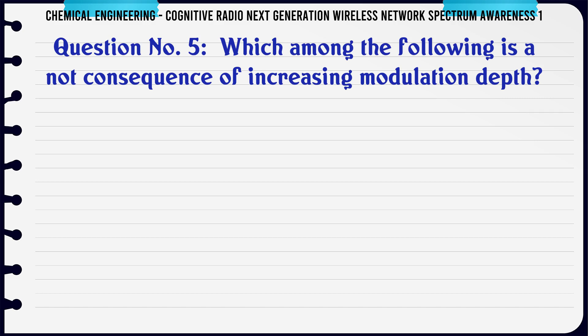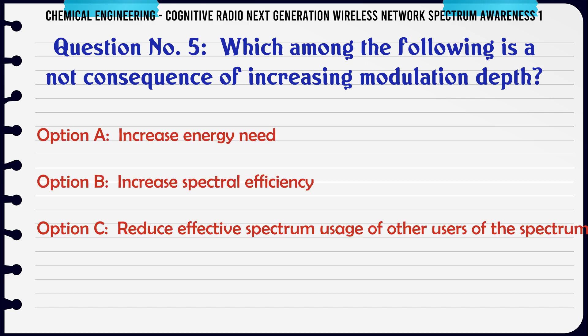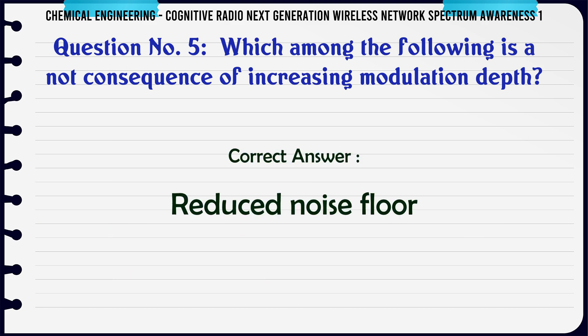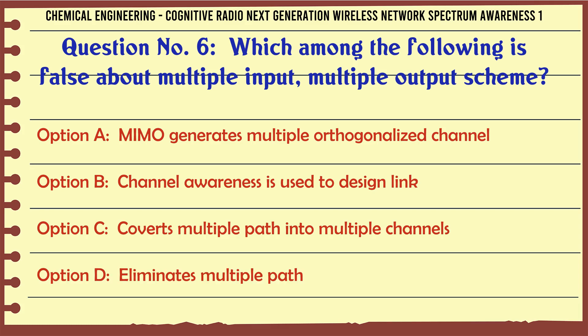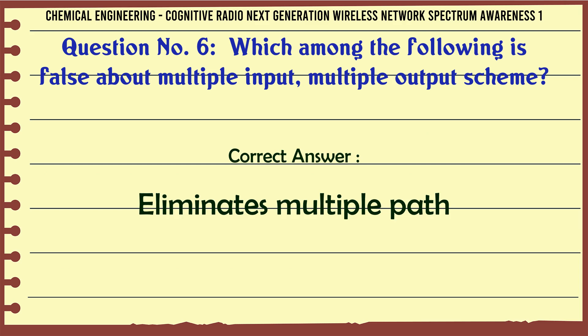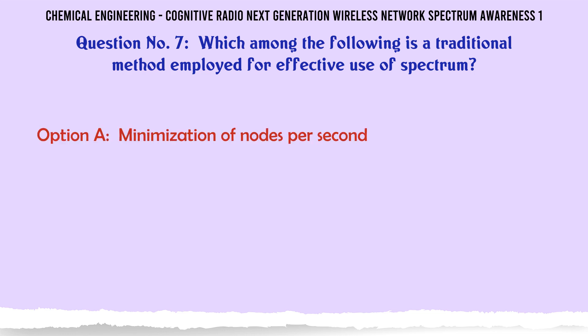Which among the following is not a consequence of increasing modulation depth? A. Increase energy need. B. Increase spectral efficiency. C. Reduce effective spectrum usage of other users of the spectrum. D. Reduced noise floor. The correct answer is: Reduced noise floor.